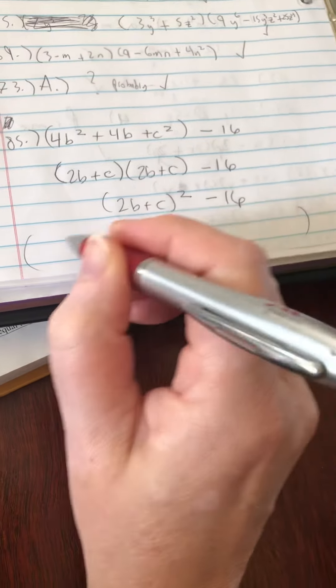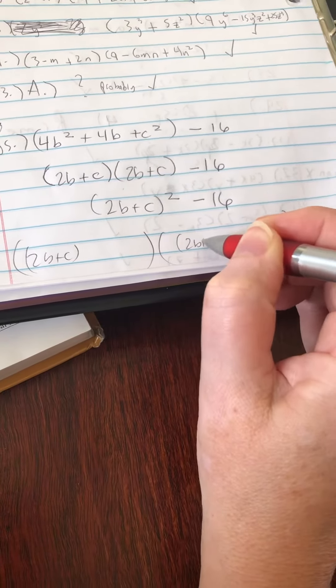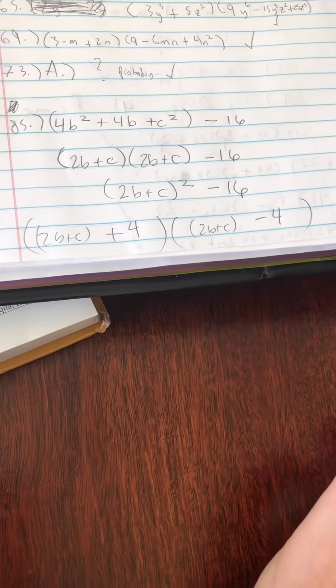2b plus C times 2b plus C plus 4 and minus 4. So that'll help you with number 85.